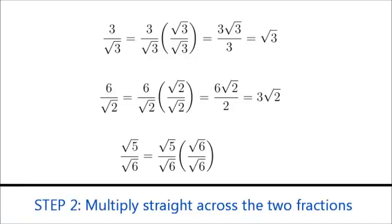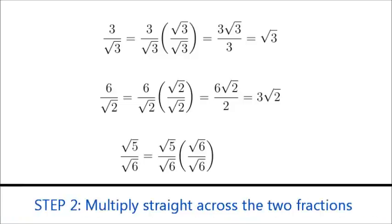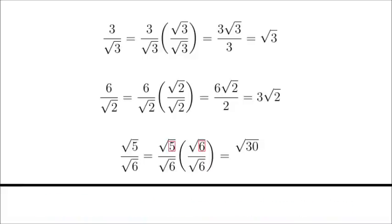On the top, when we multiply a square root by another square root, we can just multiply the stuff that's inside together and put it all under a square root. So here, we multiply the 5 by the 6, and we get the square root of 30. And on the bottom, square root of 6 times the square root of 6 is simply 6.